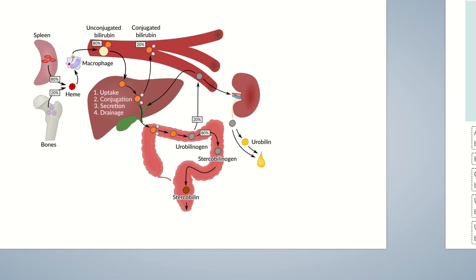Biliary obstruction, which refers to blockage of the bile ducts, can substantially increase the reflux of conjugated bilirubin from the hepatocytes back into the plasma. As a result, conjugated bilirubin levels in the blood increase and are detectable.